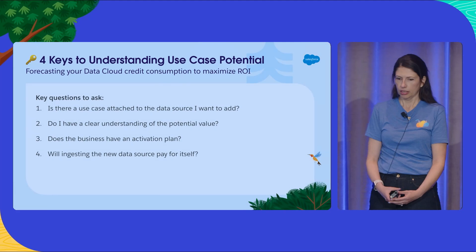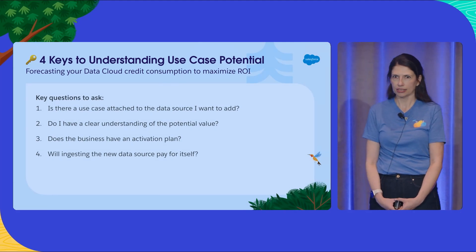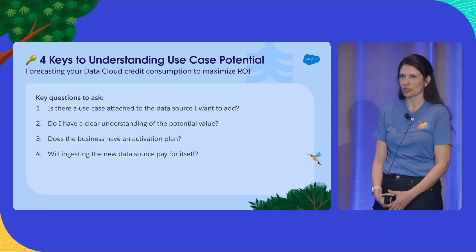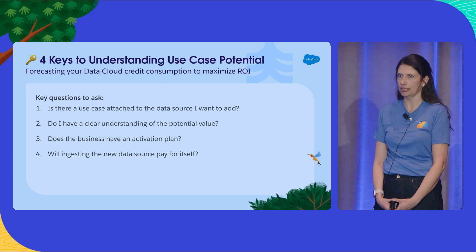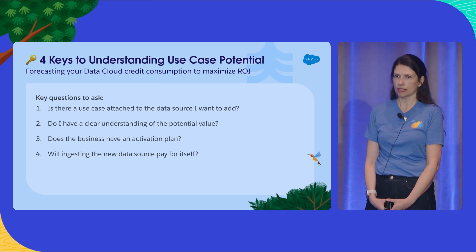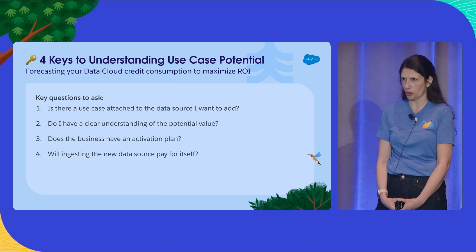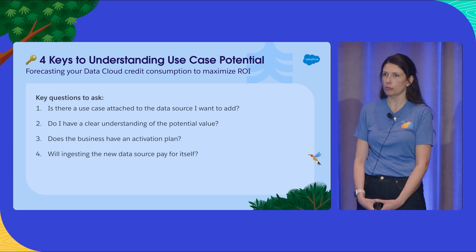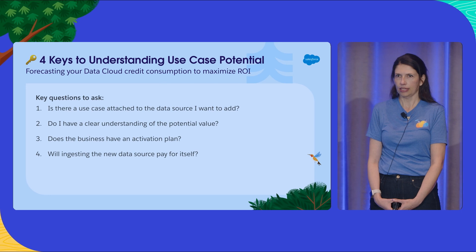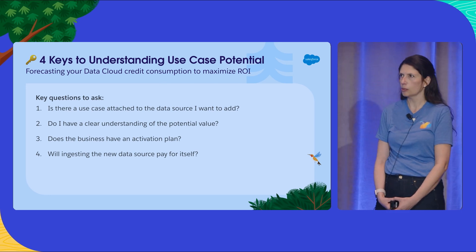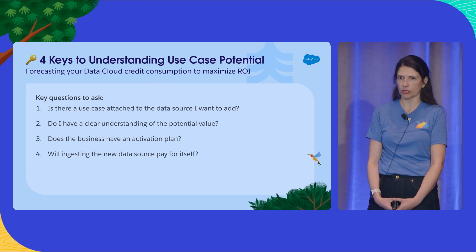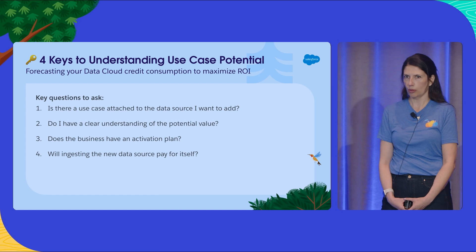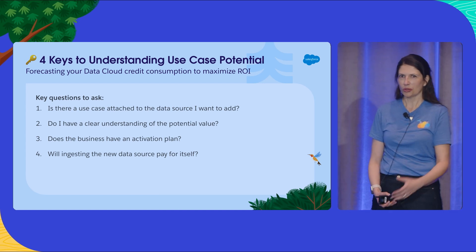There are four key questions you want to ask, especially if you're in an admin role working closely with the business. The first question is: is there an actual use case for the data you want to add to Data Cloud? If there's not a use case, you definitely don't want to add this data source into Data Cloud because you're just wasting your consumption credits. Next, do you clearly understand the use case? For example, if you're a retailer and the marketing team says they want a hyper-personalized offer for customers, the answer might be yes — but let's really understand the value of that use case.